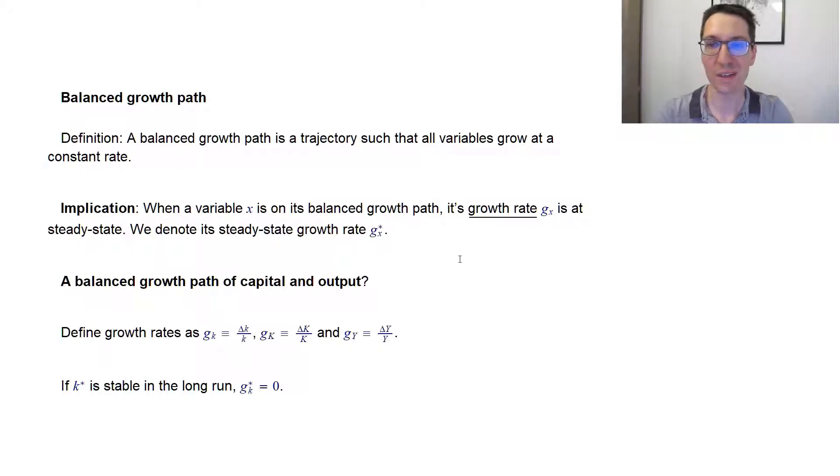So the question that everyone is asking themselves. Is there a balanced growth path in the Solow-Swan model for capital and output? If I'm asking the questions, probably you guessed that it might be a useful concept. So let's look at it. Now we're going to use our nice notation of growth. So g of k is delta k over k, and g of y is delta y over y. So the growth of capital and the growth of total output.